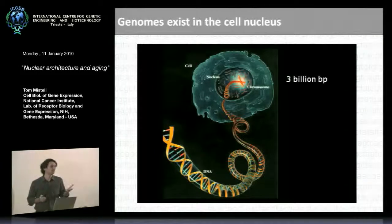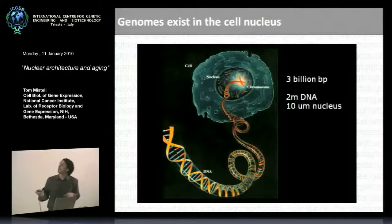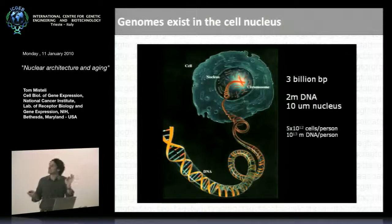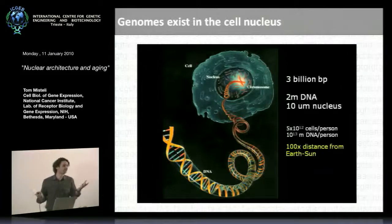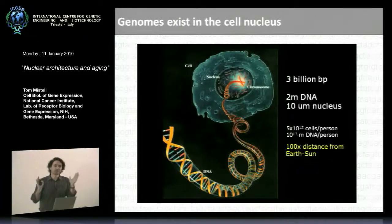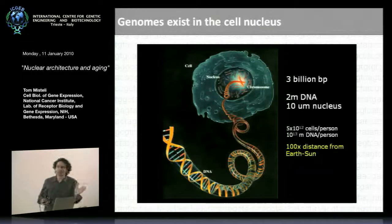Typically, you have about three billion base pairs in a human diploid genome, which means you have about two meters of DNA. The cell nucleus, where the genome is packed, is only about 10 micrometers in diameter. If you assume about five trillion cells per person, that means you have about 10 trillion meters of DNA in a human body — about 100 times the distance from Earth to Sun. So clearly we have a packaging problem: how do you pack this DNA into the nucleus such that you can get the right transcription factors to the right genes at the right time?